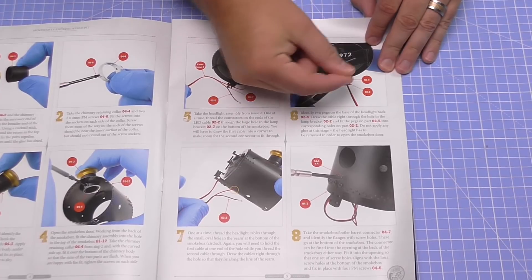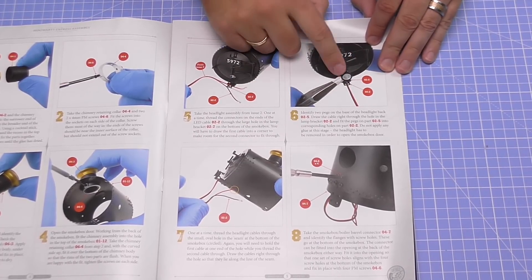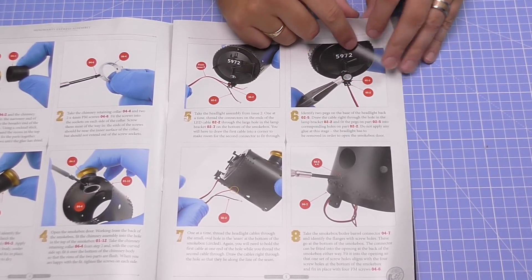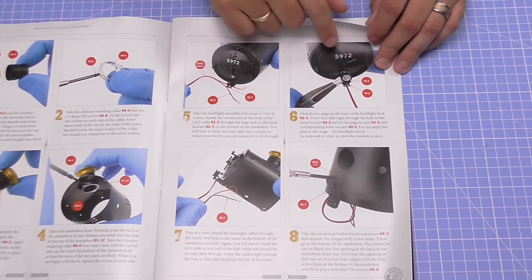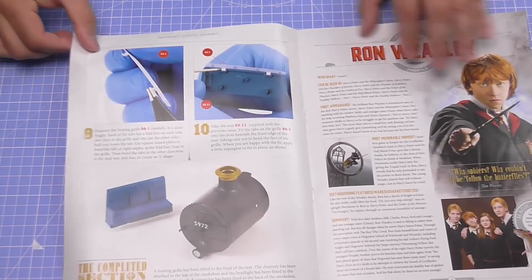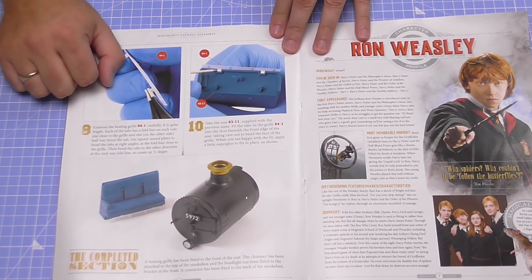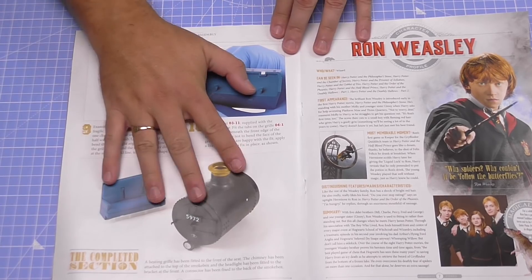We're going to be attaching the chimney on and threading the lantern through. Now, the lantern does only just sit on there. It doesn't get attached because if it's attached you can't open the door on the smoke box there. So that's only just sitting in these grooves here. I believe the torsion of the cable will actually keep it in.